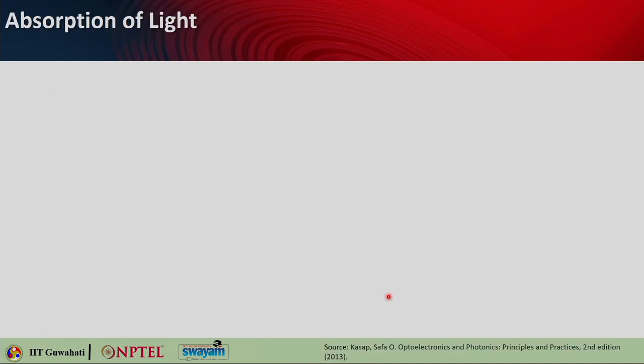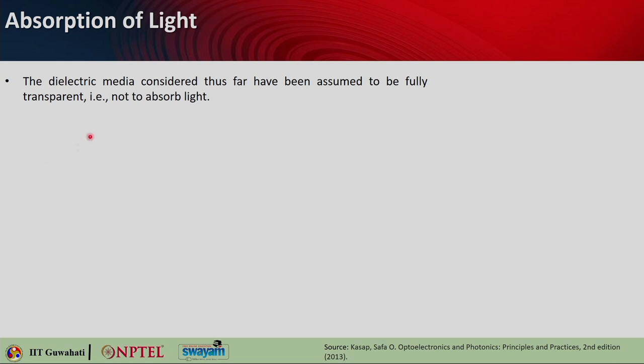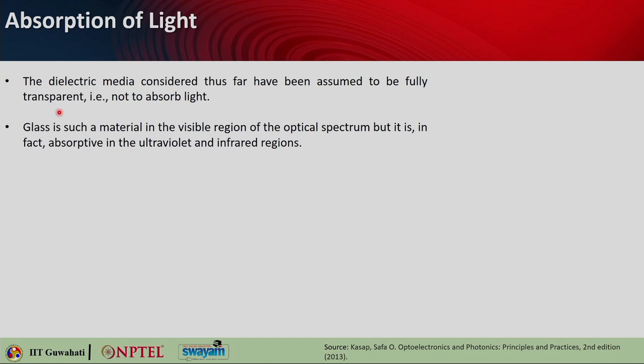Let us try to understand about the absorption of light — why light gets absorbed and who absorbs light. Till now, we have seen dielectric media which are completely transparent, meaning they do not absorb light. But is it really true? If you see glass, it is a material which is transparent in the visible spectrum. However, it is absorptive in the ultraviolet and infrared range. So the absorption property of any material is basically wavelength dependent — at a particular range it may be completely transparent, but at certain other wavelength ranges it may absorb that light.